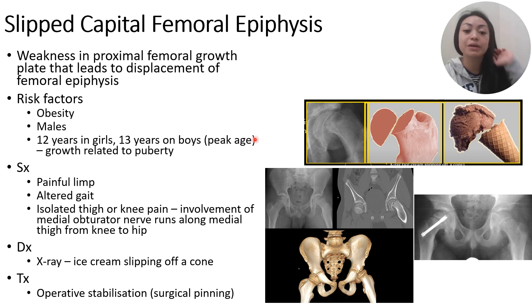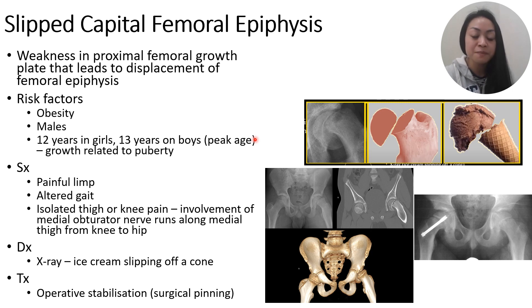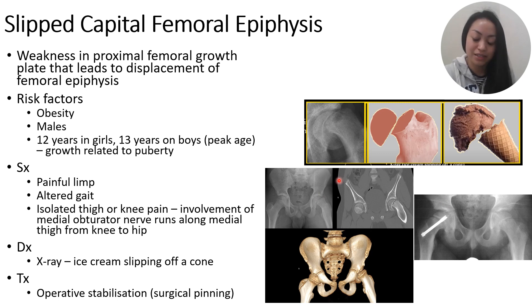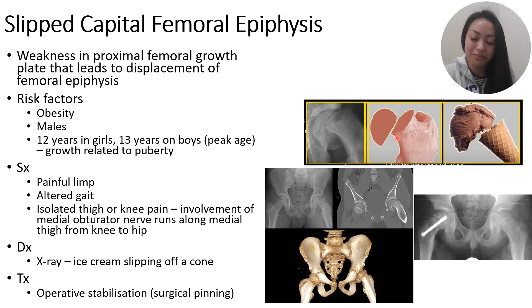The next condition is slipped capital femoral epiphysis, or SCFE — I just say 'slip cap.' With SCFE, there's a weakness in the proximal femoral growth plate that leads to displacement of the femoral epiphysis. Basically, the femoral head is slipping or sliding off the femoral neck — it looks like an ice cream slipping off a cone, where the femoral head is the ice cream and the femoral neck is the cone.